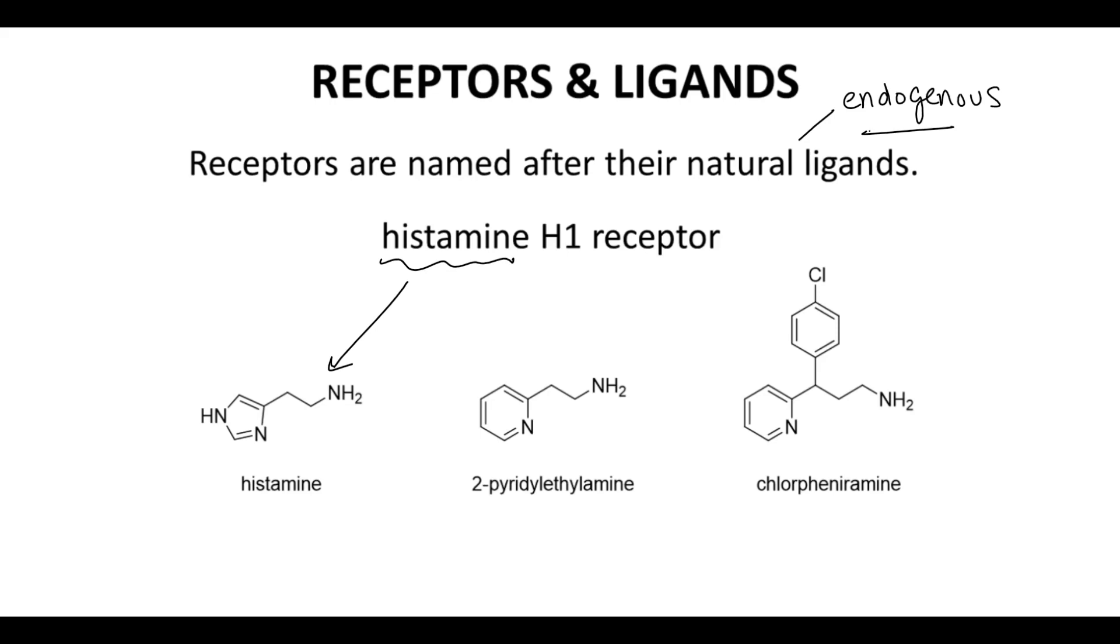2-pyridyl ethylamine and chlorpheniramine are both exogenous ligands. These are unnatural ligands for the histamine H1 receptor. 2-pyridyl ethylamine closely resembles histamine and is also, as a ligand, a full agonist. Chlorpheniramine is similar enough to bind but does not cause a response and actually blocks the action of histamine. Chlorpheniramine, therefore, is an antagonist.